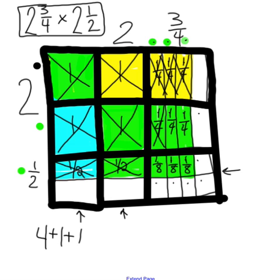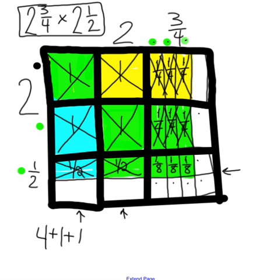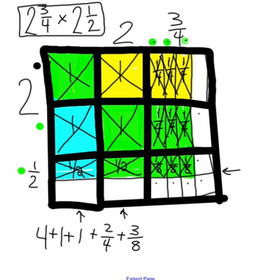Only fractions remain. Combining them: two-fourths are left — one-fourth plus one-fourth equals two-fourths — so that is written below. Three-eighths remain in the bottom square: one-eighth plus one-eighth plus one-eighth equals three-eighths, which is added below. The final problem is four plus one plus one plus two-fourths plus three-eighths.